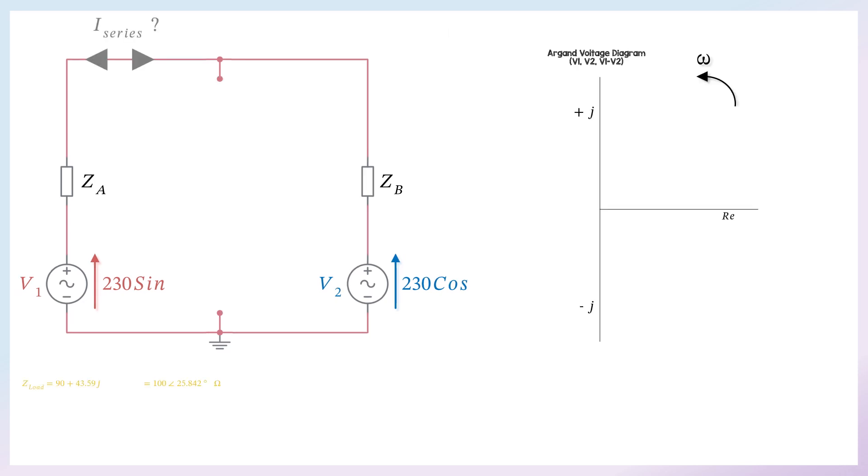So there are the phasor diagram. We can draw the voltages. And step one was to find the total voltage, which is the phasor sum of the two. So V1 plus negative V2, because it's going in the opposite direction, equals the total voltage.